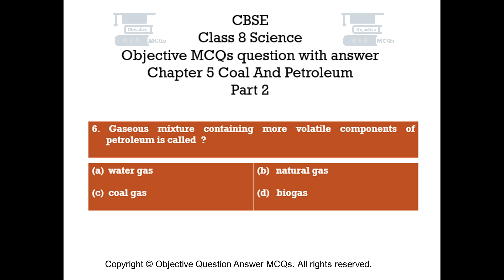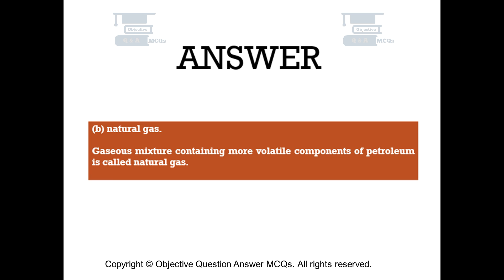Question number 6: Gaseous mixture containing more volatile components of petroleum is called — Option A: Water gas. Option B: Natural gas. Option C: Coal gas. Option D: Biogas. The right answer is Option B: Natural gas.